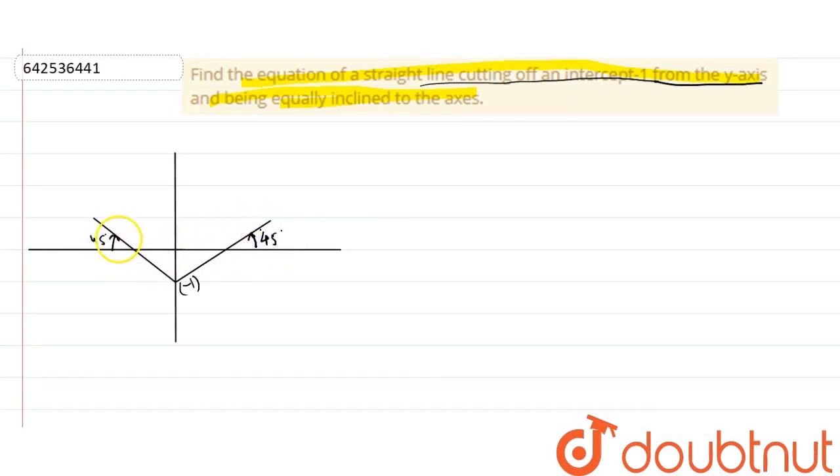And also, if this is 45, then this must be 135. Okay. By using the adjacent angle, I can find out this angle. Because sum of this angle and this angle is always equal to 180 degree.